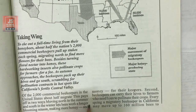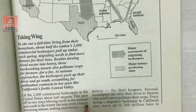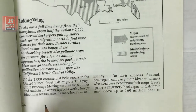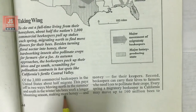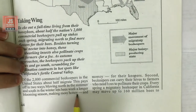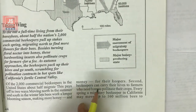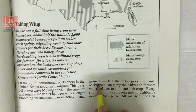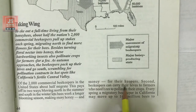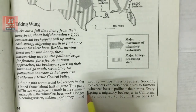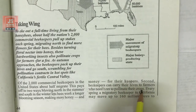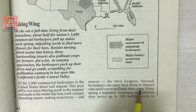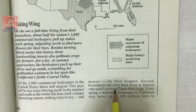This lets bees work a longer blooming season, which means the bees can work all year round, making more honey and money for their keepers. Second, beekeepers can carry their hives to farmers who need bees to pollinate their crops. Bees are also used where farmers need to pollinate their crops.